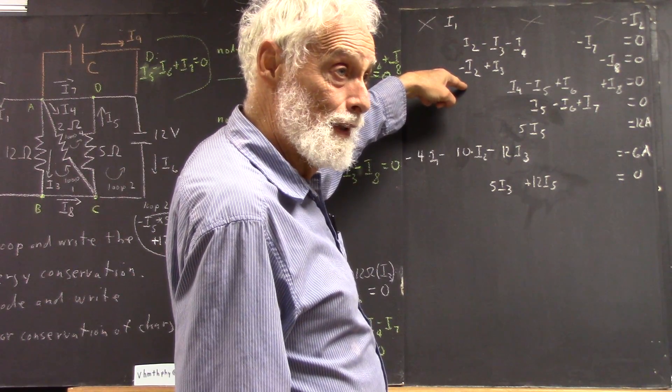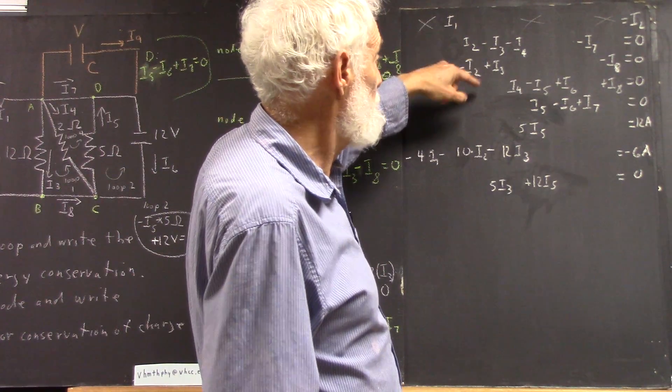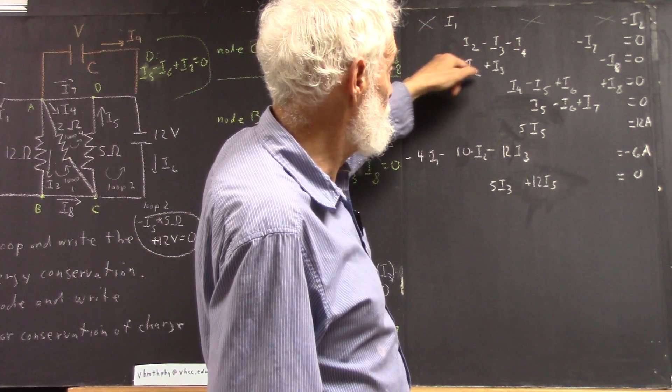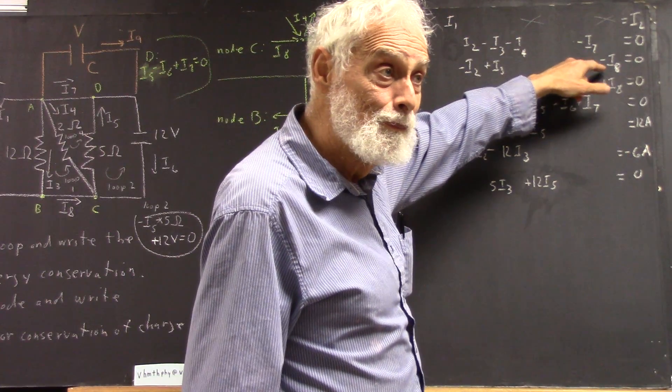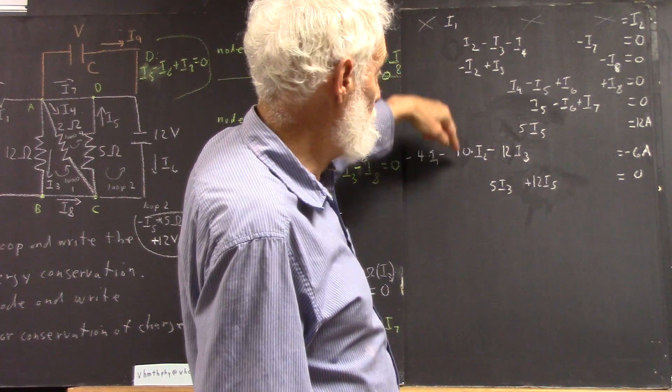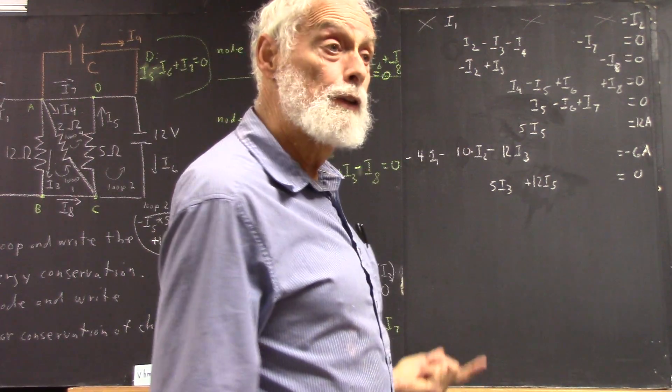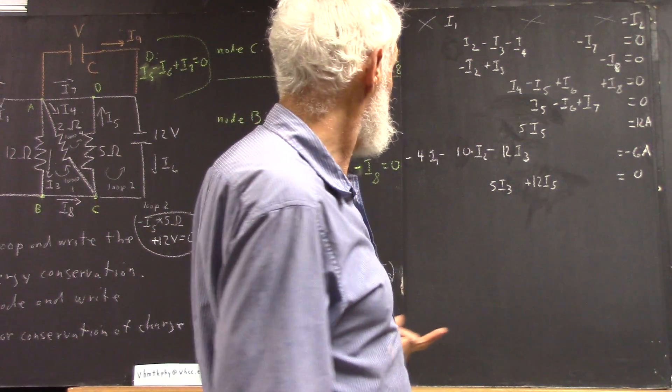Okay? So, well, I've got them in order here. It would be a little easier to switch these two because this one only has three variables. Okay? But it's easy enough to do what we do here. So we just wipe out the I2s. Okay?